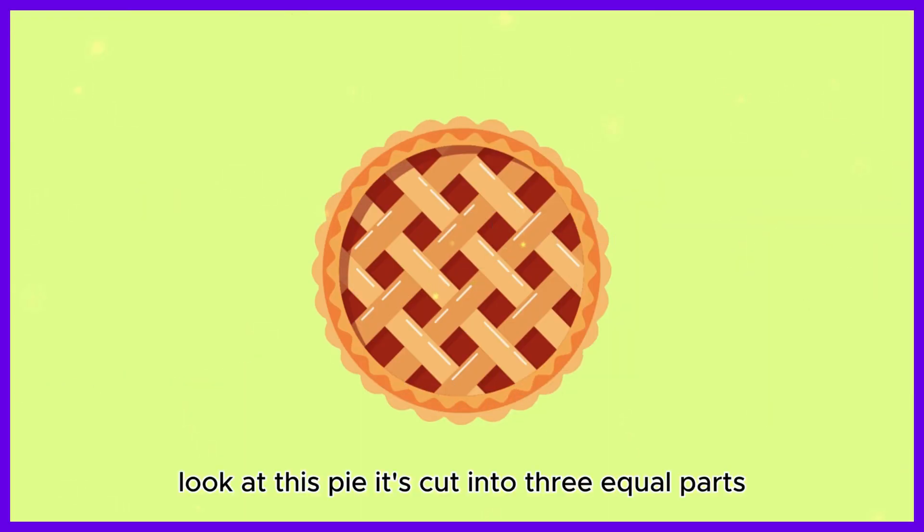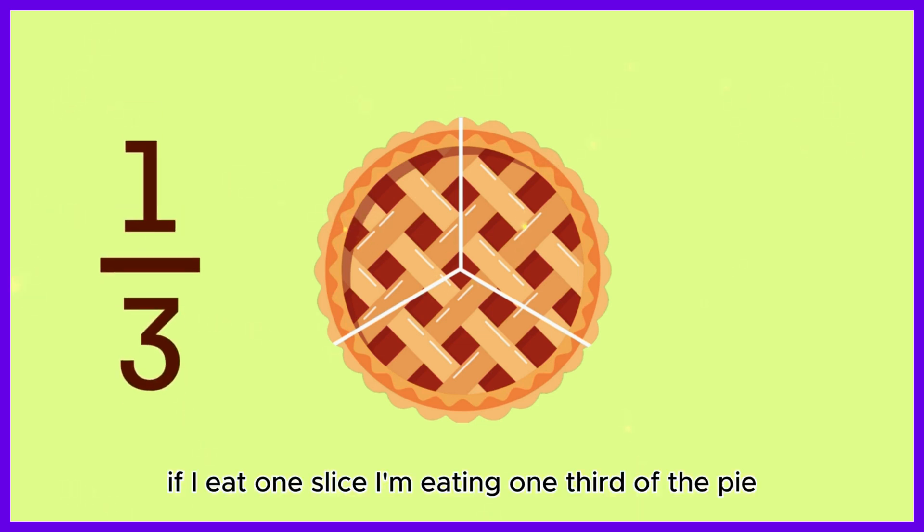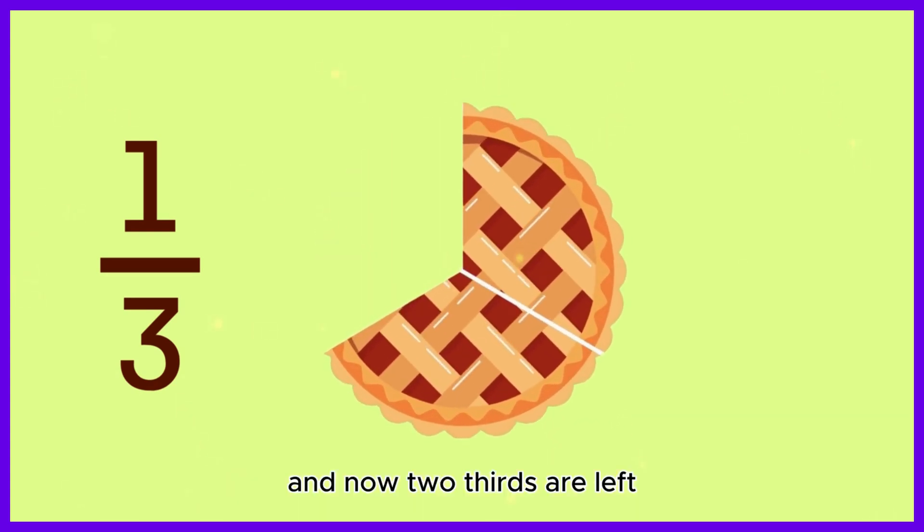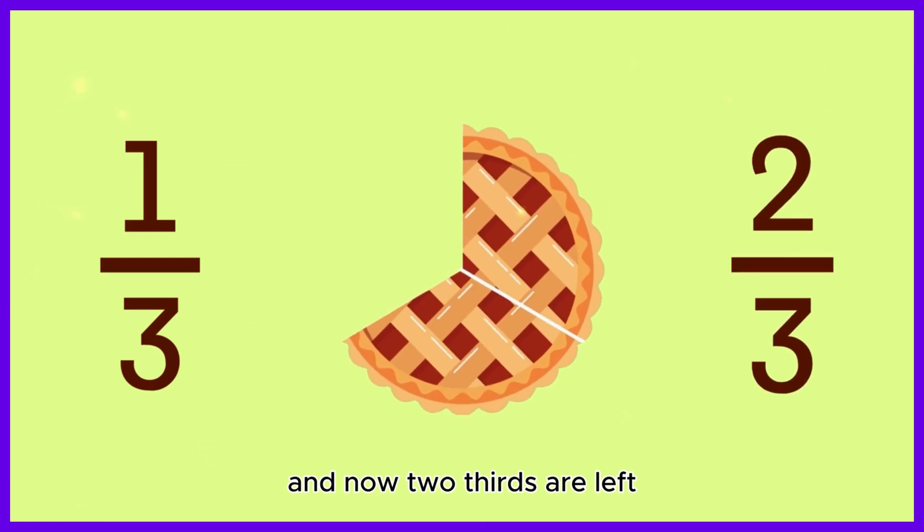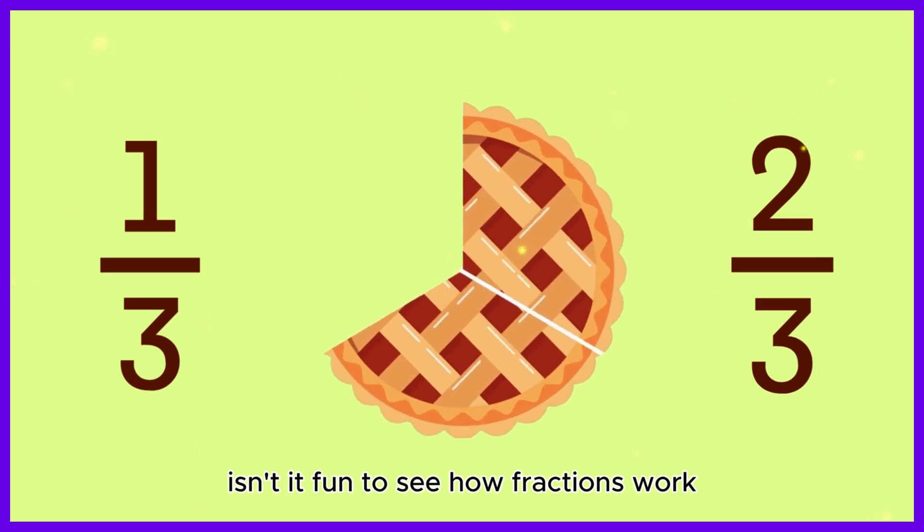Look at this pie. It's cut into three equal parts. Each part is called one-third. If I eat one slice, I'm eating one-third of the pie. And now, two-thirds are left. Isn't it fun to see how fractions work?